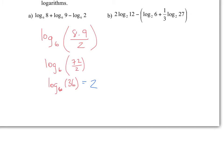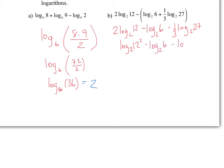Next example — expand the brackets first: 2 log base 2 of 12 minus log base 2 of 6 minus one third log base 2 of 27. Now apply the power rule: log base 2 of 12 squared minus log base 2 of 6 minus log base 2 of 27 to the power of one third. Simplify: 12 squared is 144, and 27 to the one third is the cube root of 27, which is 3.